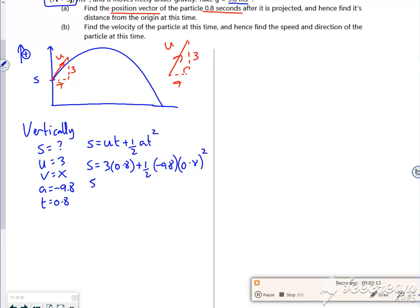So s is going to be minus, according to this, the completed pack, it's minus 0.736 metres. Now remember, that's 0.73 metres below my start point. So that's below the start point, which was 5 metres above the origin.